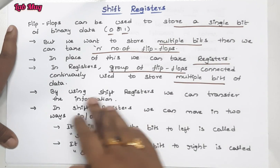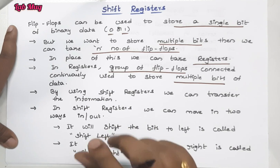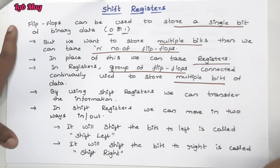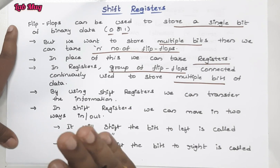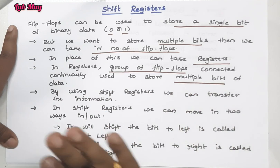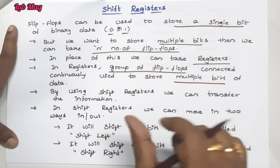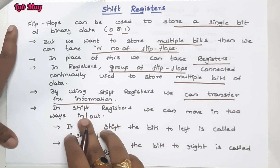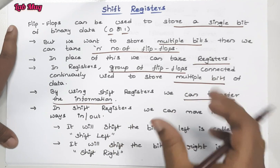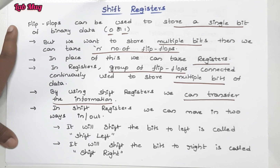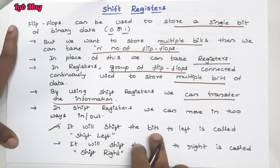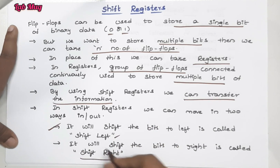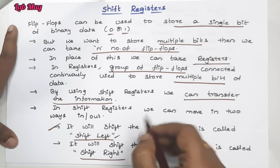By using registers we can access multiple bits of data. In a shift register, 'shift' means the data bit is passed either left or right. If we do a left shift, the data moves to the left; if we do a right shift, the data moves to the right. Data can only pass in one direction at a time — either left or right.